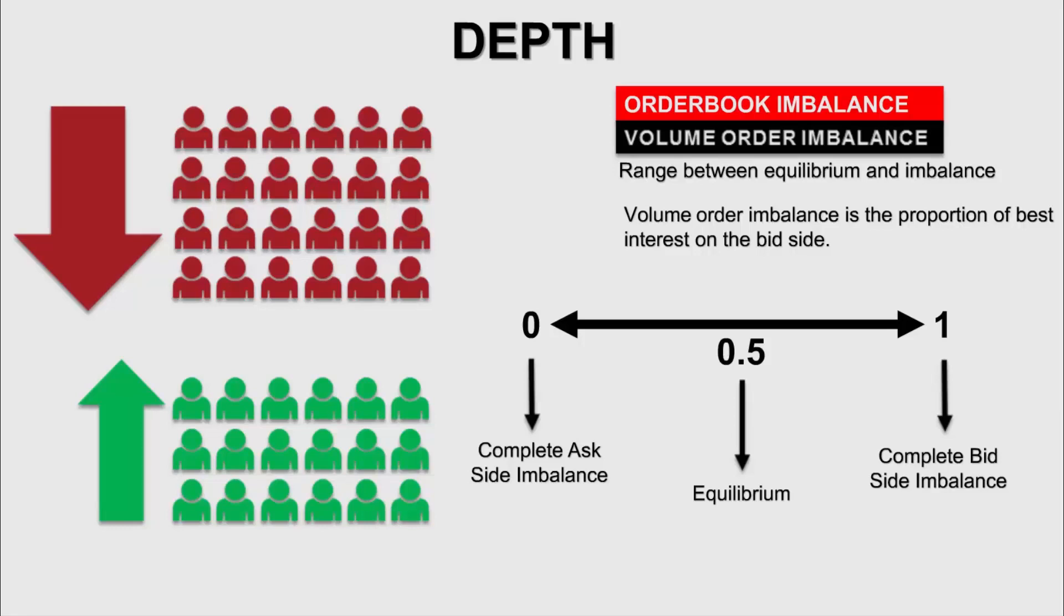When the calculation is done this way, the imbalance will range from 0 to 1. When it's 0, this is converted to an absolute ask side imbalance. This, in normal circumstances, cannot really happen because this means that there aren't any buyers in the market. And ultimately, it means that there's no market.